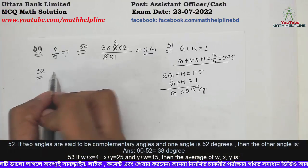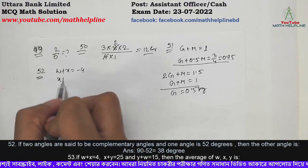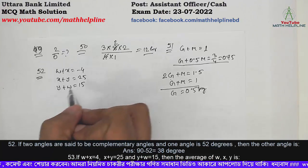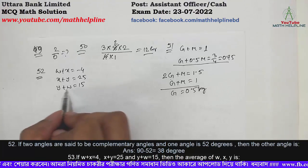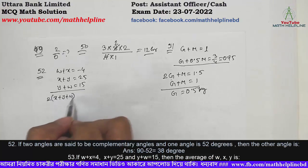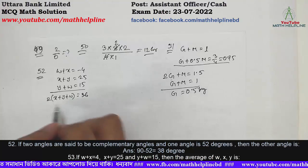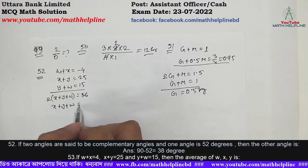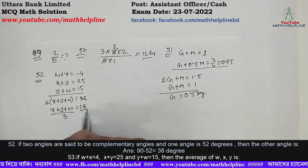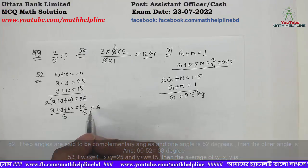Problem number 52: If w plus x equals minus 4, x plus y equals 25, and y plus w equals 15, then what is the average of w, x, y? Adding all three equations: 2(x plus y plus w) equals 36. So x plus y plus w equals 18. Average equals 18 divided by 3 equals 6.